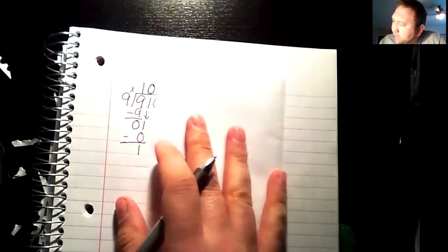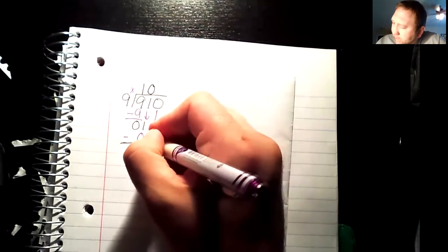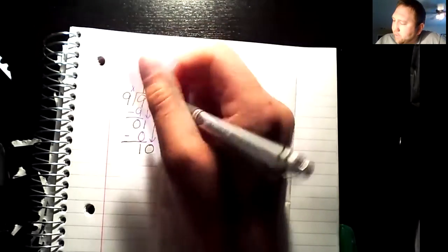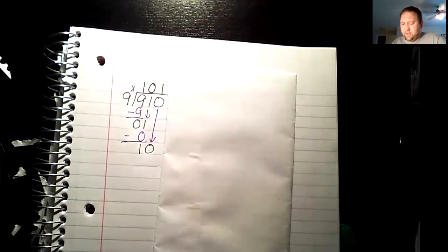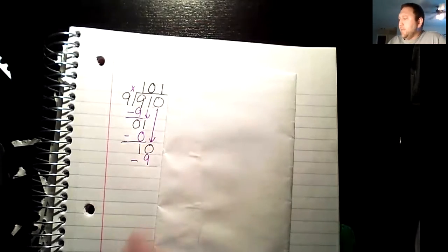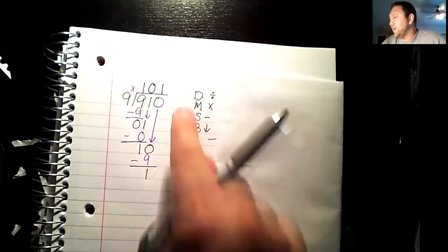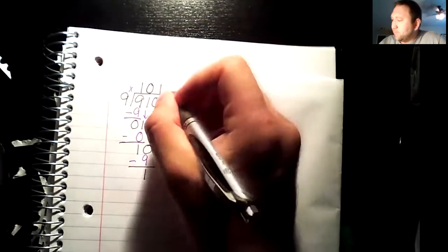Now I'm ready to bring down my next number. So now I have 10 divided by 9, which I can do. So I know that 9 can go into 10 one time. I know 9 times 1 is 9 and I get 1 left over. I have nothing else to bring down here, so therefore I am done with this problem. So that becomes my remainder.